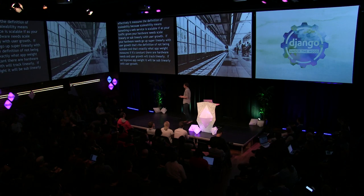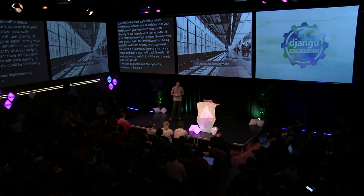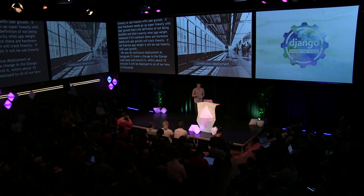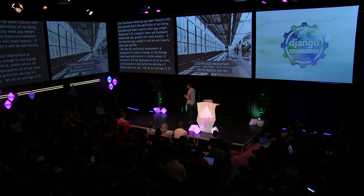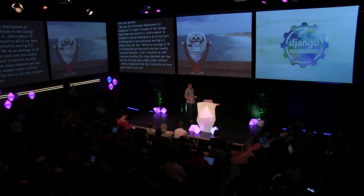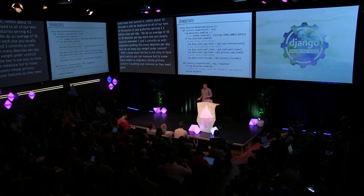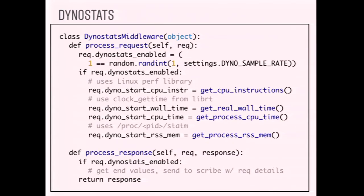We also do continuous deployment at Instagram. If I make a change to the Django code base and commit it, within about 10 minutes it will be deployed to all of our tens of thousands of jazz guitarists serving 4.2 billion likes per day. We do an average of 30 to 50 deploys per day, each usually containing somewhere between one and three commits. With engineers pushing this many deploys per day, how do we keep app weight under control? The key is not only having good metrics, but making them visible to engineers whose primary concern is pushing cool features.